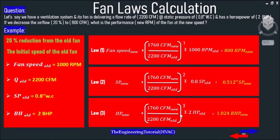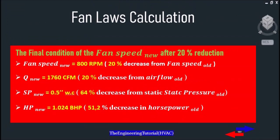Brake Horsepower New equals (1760 CFM New divided by 2200 CFM Old) cubed, multiplied by 2 horsepower old, which equals 1.024 brake horsepower new. As you can see, the horsepower has changed from 2 to 1.024.